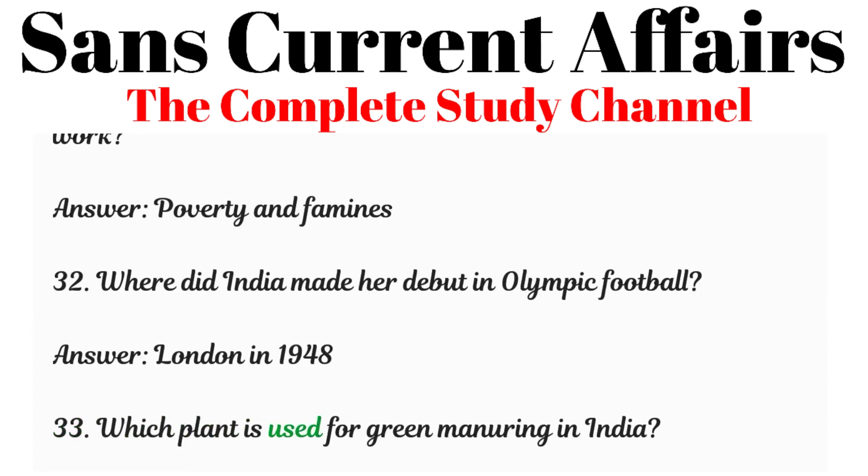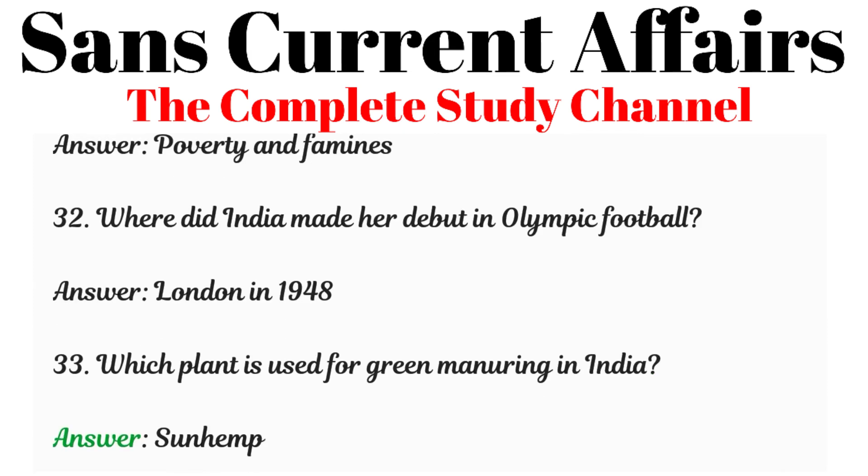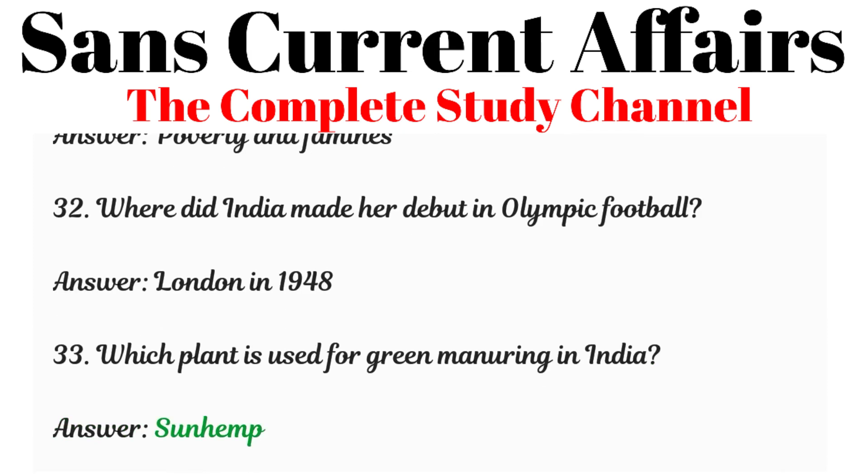Question 33: Which plant is used for green manuring in India? Answer: Sunhemp.